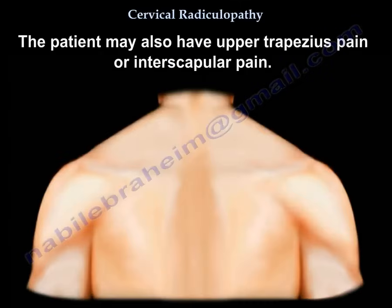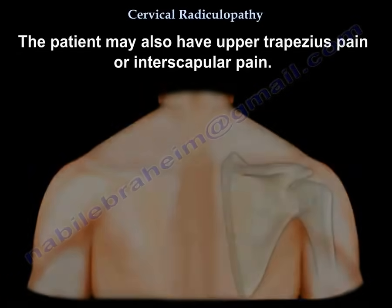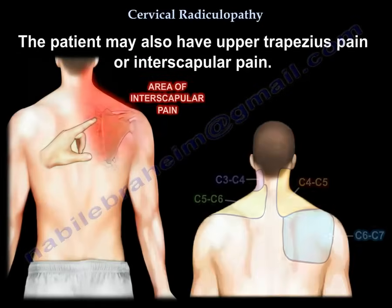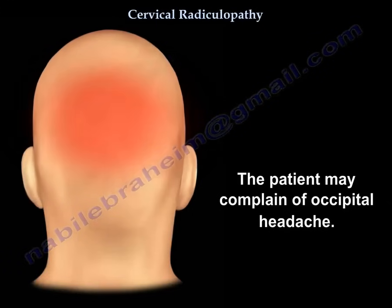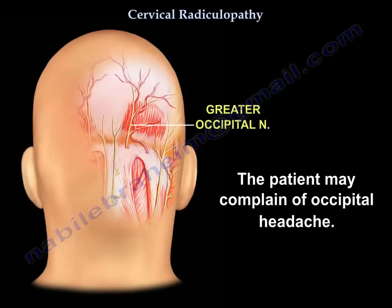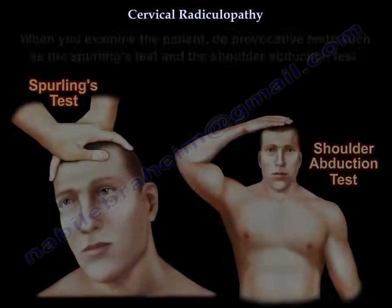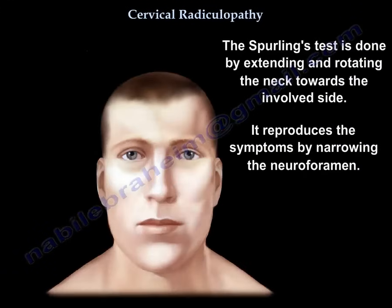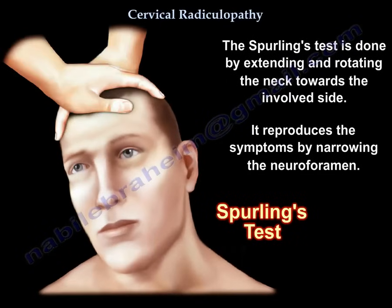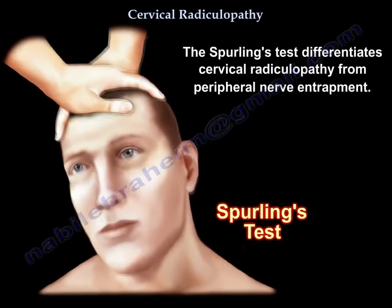The patient may also have upper trapezius pain or interscapular pain, and may complain of occipital headache. On examination, you will perform provocative tests such as the Spurling test and the shoulder abduction test. The Spurling test is done by extending and rotating the neck toward the involved side; it reproduces symptoms by narrowing the neuroforamen and differentiates cervical radiculopathy from peripheral nerve entrapment.